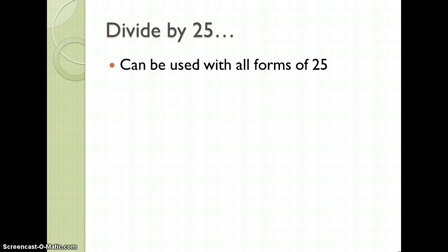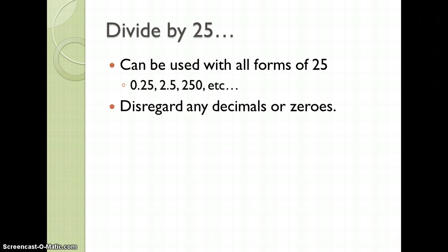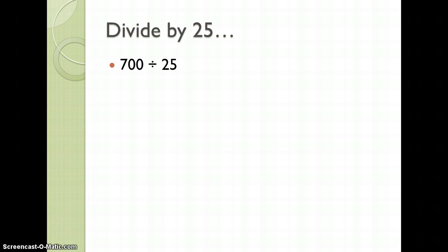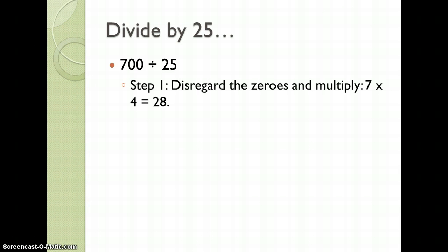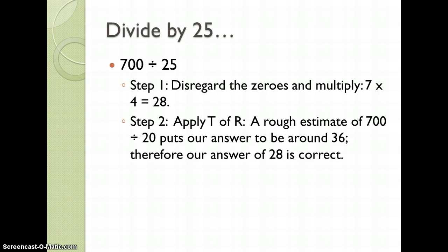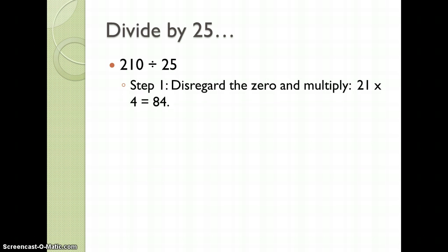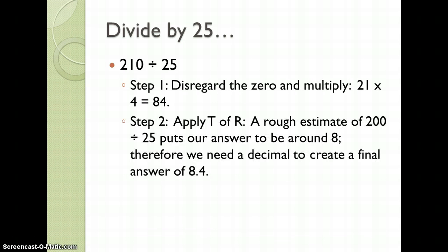To divide by 25 can be used with all forms of 25 — 0.25, 2.5, 250, etc. We're going to disregard any decimals or zeros and multiply by 4, then apply the test of reasonableness to achieve our final answer. So 700 divided by 25: disregard the zeros and multiply 7 times 4, which is 28. A rough estimate of 700 divided by 20 puts our answer to be around 36, so our answer of 28 is correct. For 210 divided by 25: disregard the 0 and multiply 21 times 4, which is 84. A rough estimate of 200 divided by 25 puts our answer to be around 8. Therefore, we'll need to add a decimal to create a final answer of 8.4.